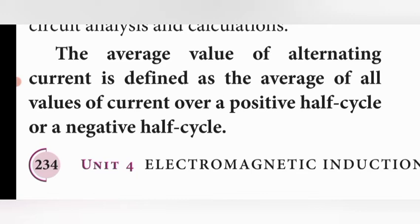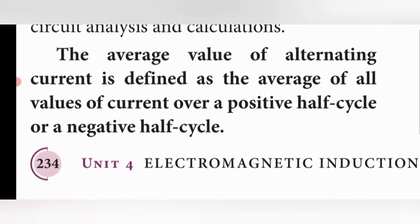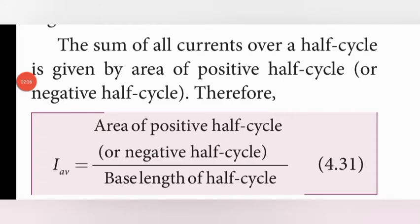When the current passes through in a wave formation, we take all the values of the positive half cycle, or all the values of the negative half cycle, sum them, and divide by the base length of the half cycle. The formula is: I_average = area of positive (or negative) half cycle divided by the base length of the half cycle. Using this formula we find the average current value. Let's see the derivation now.